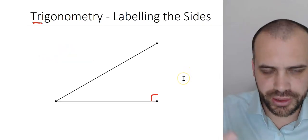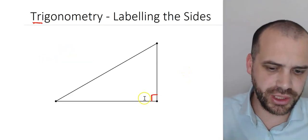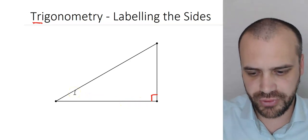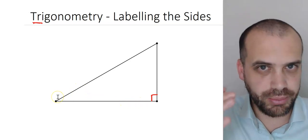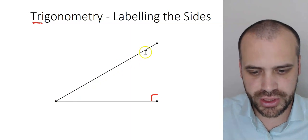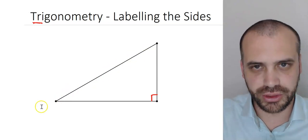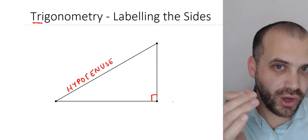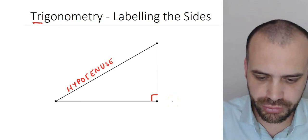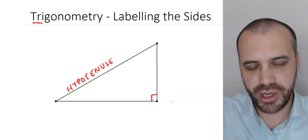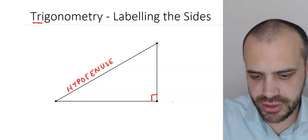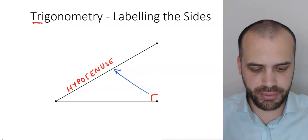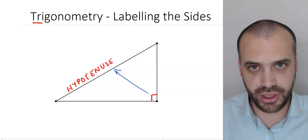In this video we're going to be labeling them, because if you can't label them you can't really work with them. The first label you definitely know from your work with Pythagoras — the longest side of a right angle triangle is called the hypotenuse. The easiest way to find it is to look at the right angle and find the side directly opposite it. It's also the longest side.